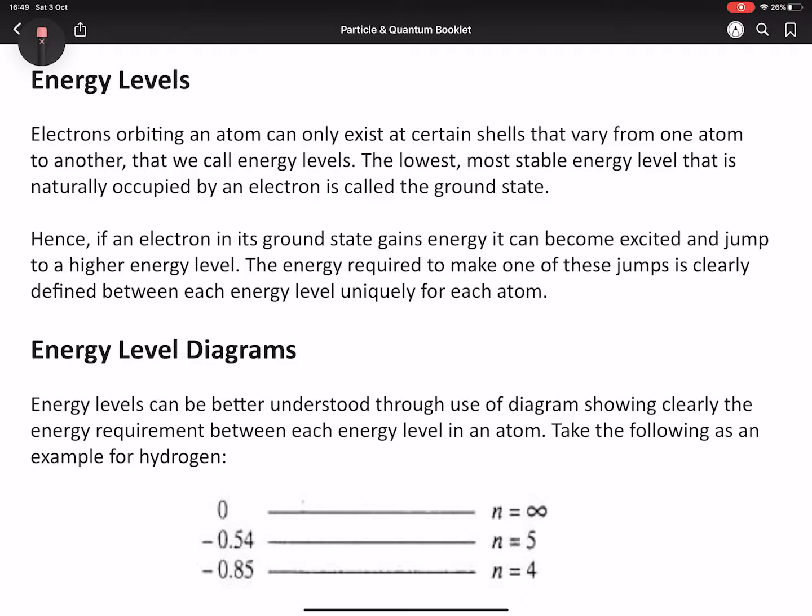We're talking about electrons in an atom in their ground state. That is their normal natural position to be in, the most stable energy level. When it becomes excited, the electron will jump to one of the higher energy levels.